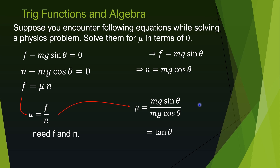And sine theta over cosine theta is tangent — that's the trig identity we learned! So mu = tan θ. If you know theta you can compute mu, or if you know mu you can solve for theta using inverse tangent. I hope you learned the basics of trig from this video. Maybe I'll meet you in another video or in class — bye!